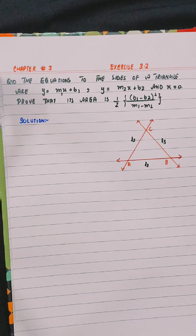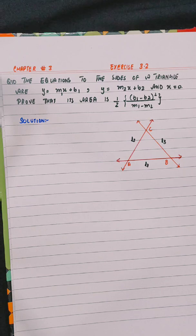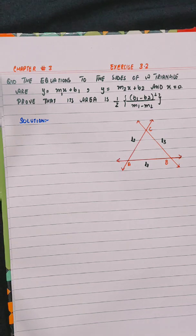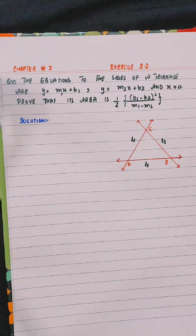The equations to the sides of a triangle are y = m1x + b1, y = m2x + b2, and x = 0. Prove that its area is 1/2 times (b1 - b2) whole square divided by (m1 - m2).